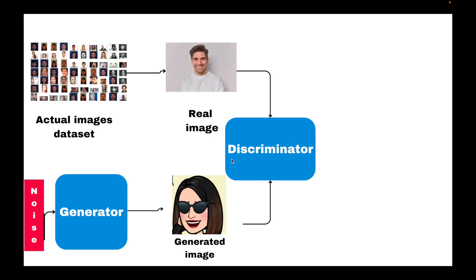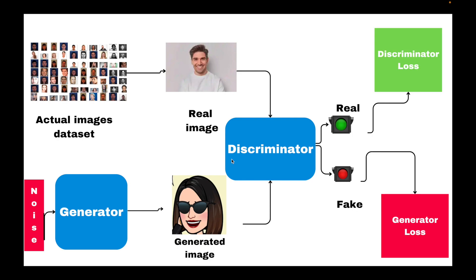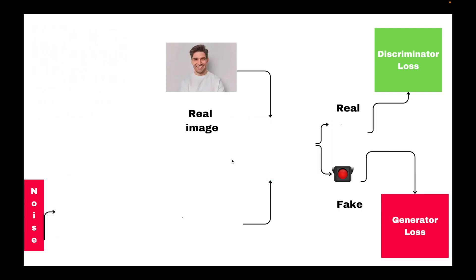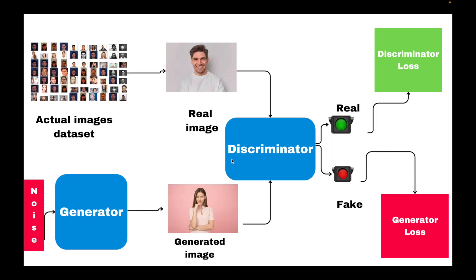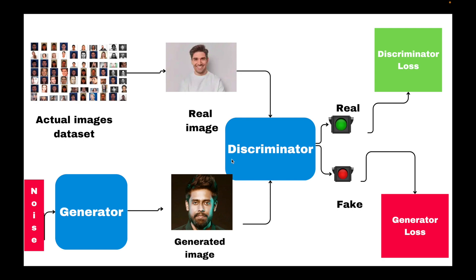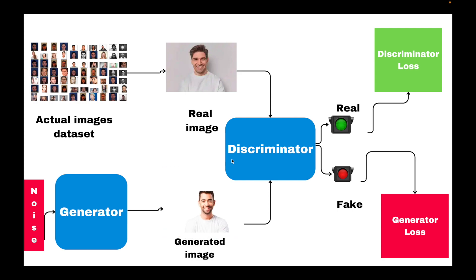The discriminator analyzes the images provided to it and attempts to determine whether they are real or fake. Its goal is to improve its ability to identify fake images, forcing the generator to create more realistic ones. This process repeats, and both networks continue to improve until the generator can consistently create fake images that are indistinguishable from real ones.